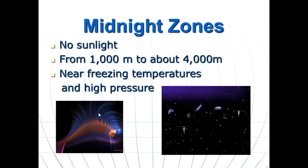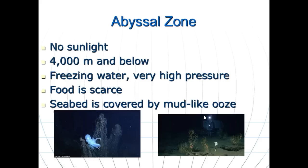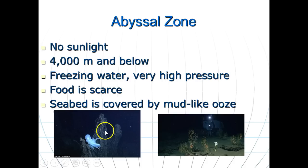The midnight zone spans from about 1,000 to 4,000 meters. There is no sunlight, temperatures are near freezing, and pressure is very high. Organisms rely on the ocean snow of dead matter drifting down. The abyssal zone is approximately 4,000 meters and below — many references consider the midnight and abyssal zones the same. Conditions include freezing water, extremely high pressure, very little food, and a mud-ooze seafloor. Organisms here are typically soft-bodied because hard parts can't withstand the pressure. Hydrothermal vent ecosystems are also found in the abyssal zone.